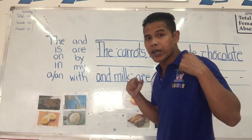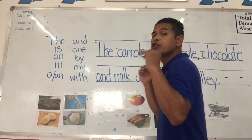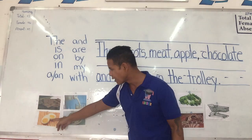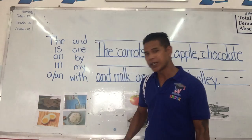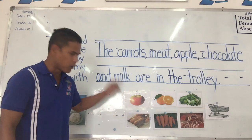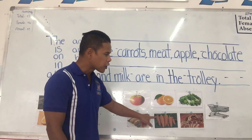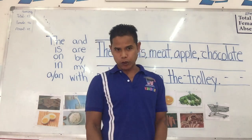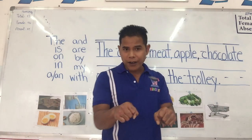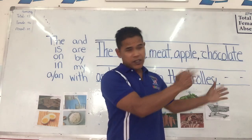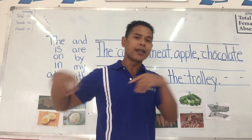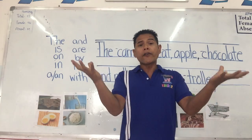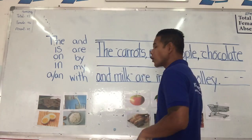Let's look at some of the foods we're going to use. We're not going to use all of them — you determine which one we're going to use by the sentence. We have: chocolate, eggs, milk, rice, apple, chicken, orange, carrot, vegetable, meat, and trolley. We call this one either a cart or a trolley. In the United States we call it a cart; in Great Britain and Europe they call it a trolley. Both are correct. Let's go to reading the sentence.